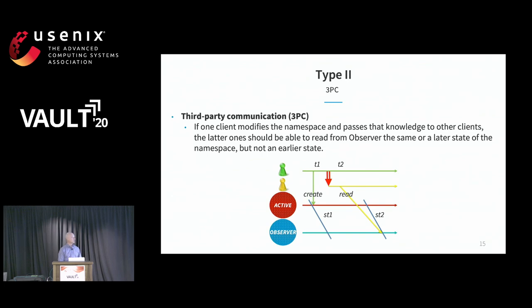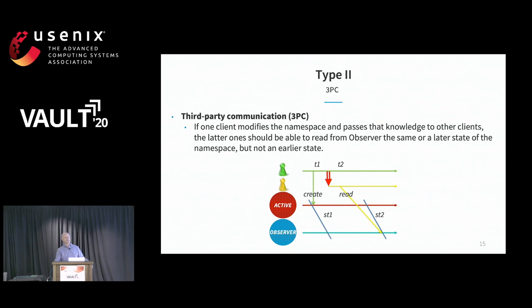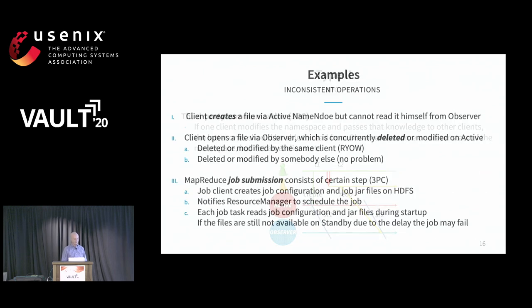There are two types of potential inconsistencies. The first is called read-your-own-writes: a single client first goes to the active and creates a file, then on the next step tries to read this file but may not find it, because the observer state is delayed compared to active. The second type is third-party communication (3PC): I create a file on the active, then tell a colleague to go check it, and he may not see it.